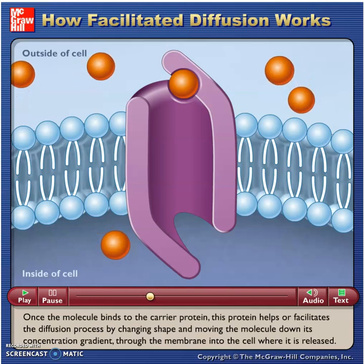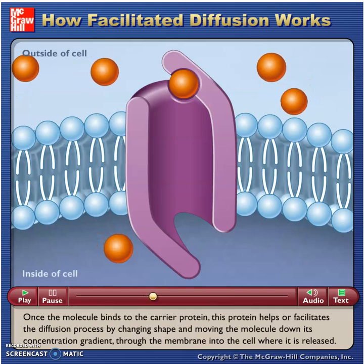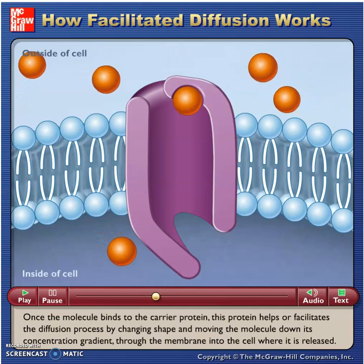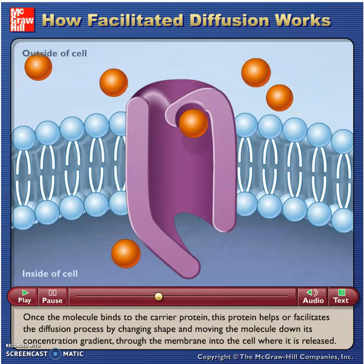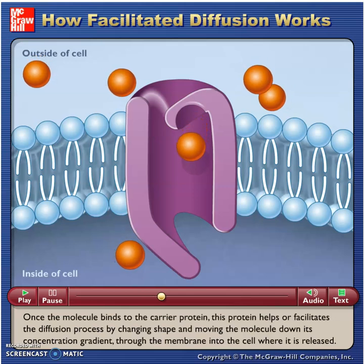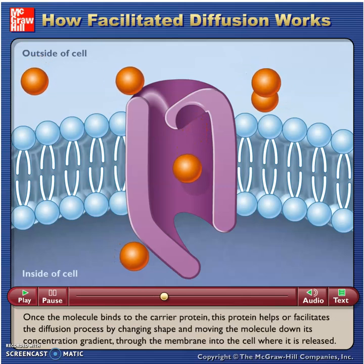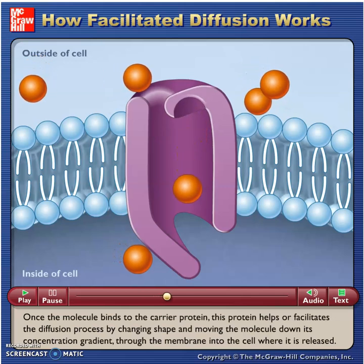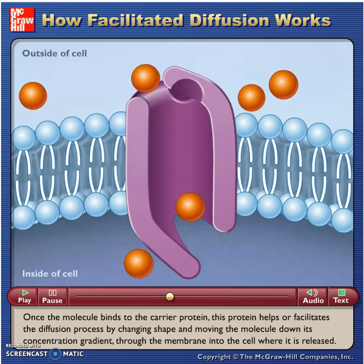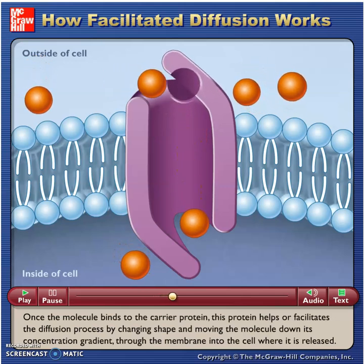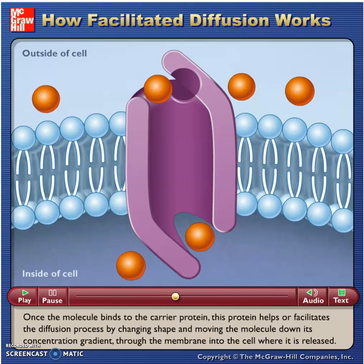this protein helps or facilitates the diffusion process by changing shape and moving the molecule down its concentration gradient through the membrane into the cell, where it is released.